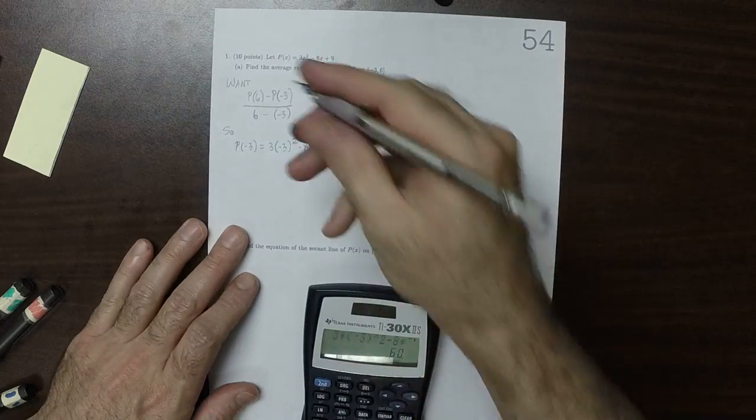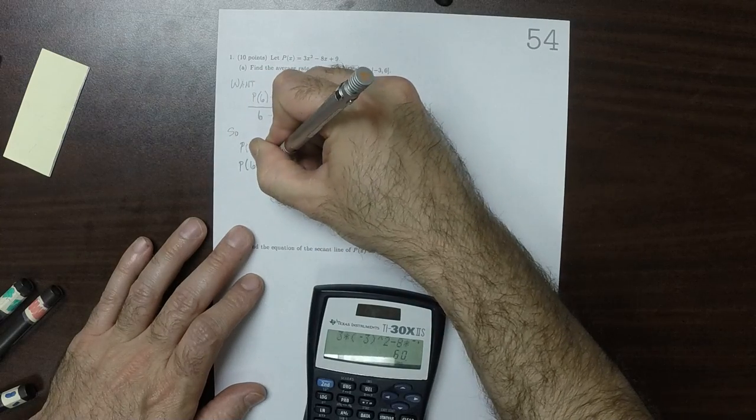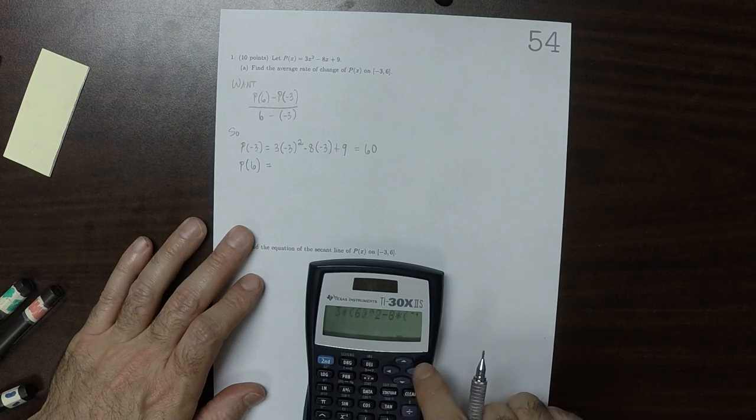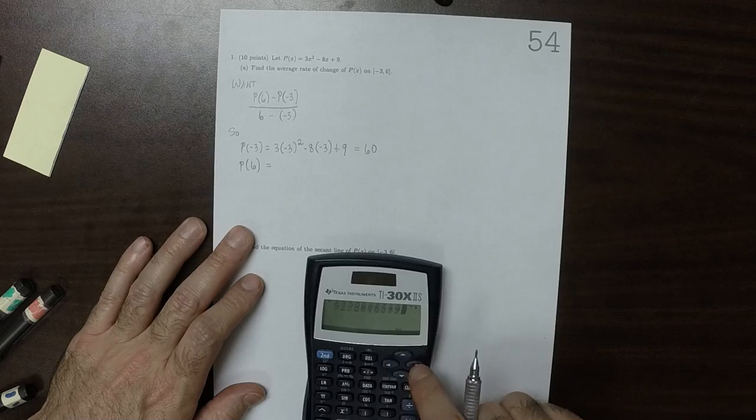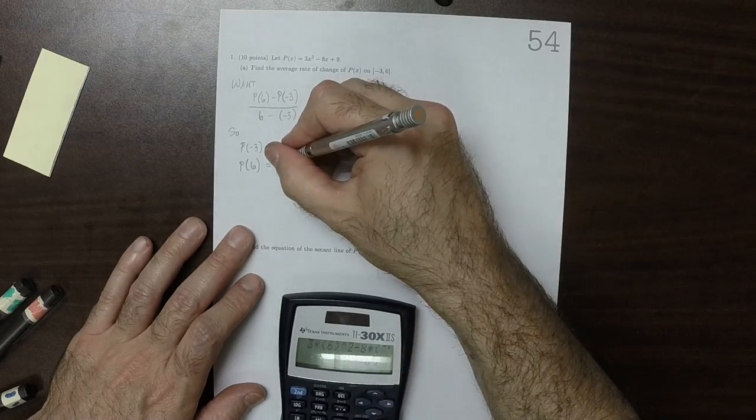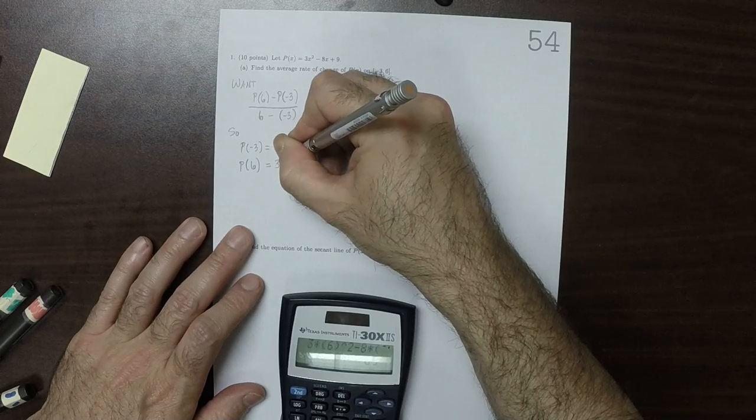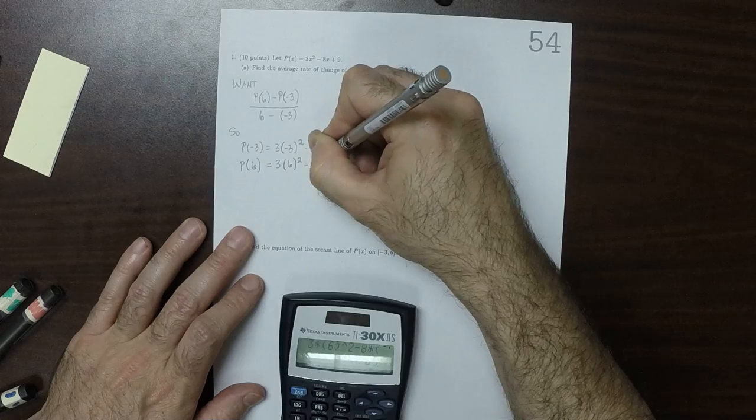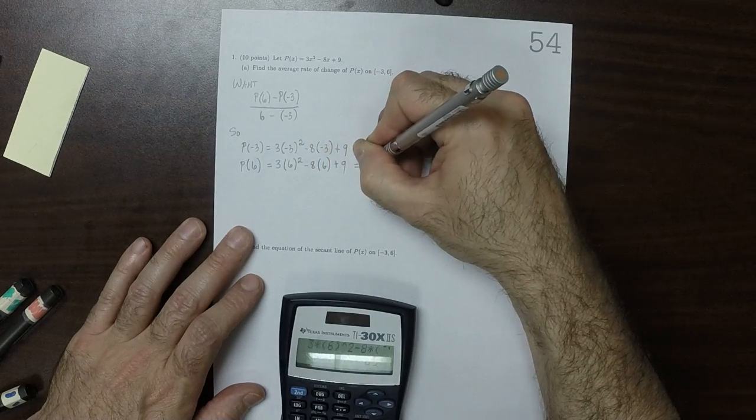Now we want to plug in 6. P evaluated at 6 is 69. So that'd be 3 multiplied by 6 squared minus 8 multiplied by 6 plus 9. That's 69.